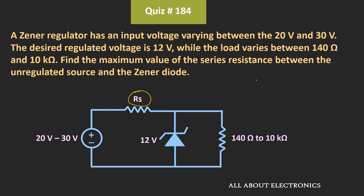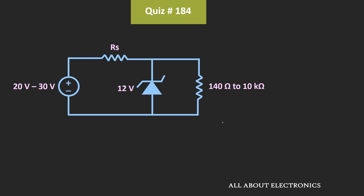Now, we have not been given the value of Izk or Izm. So we will assume that the Zener knee current is equal to zero and Izm is sufficiently large enough so that it will work in the given range. Here, Is is the source or series current and Il is the load current. Whenever the current through the Zener diode Iz is zero, the source current Is is equal to Il.